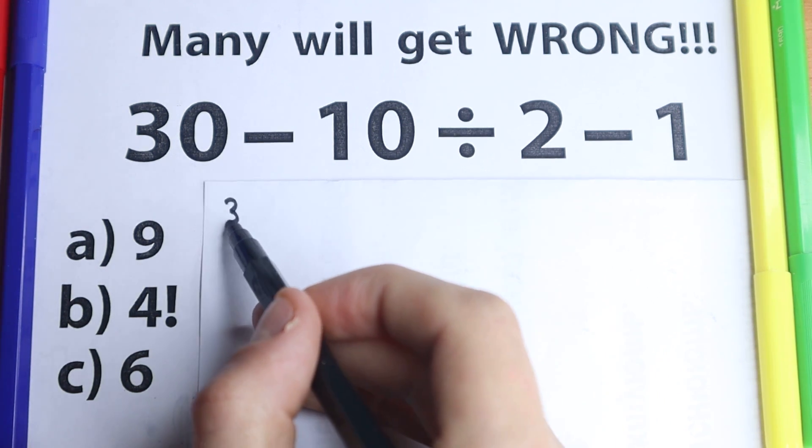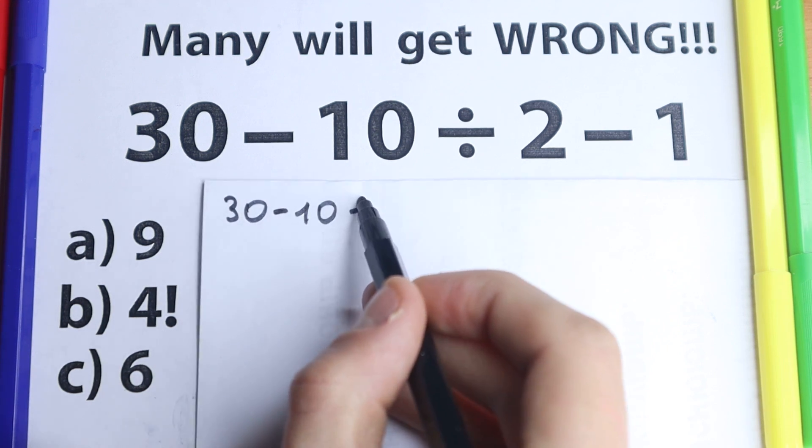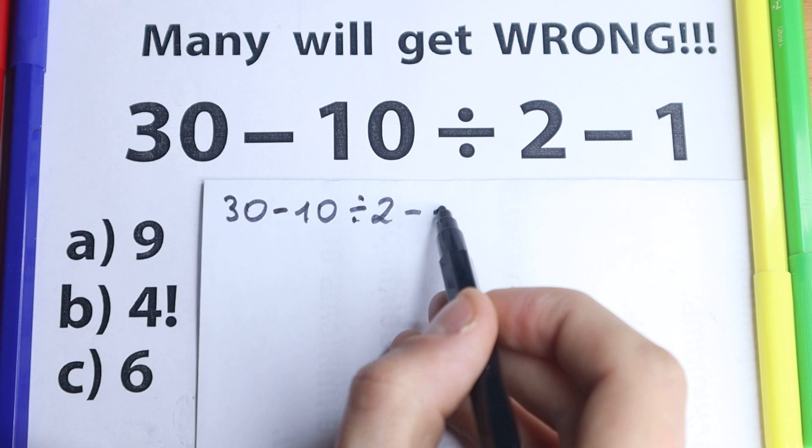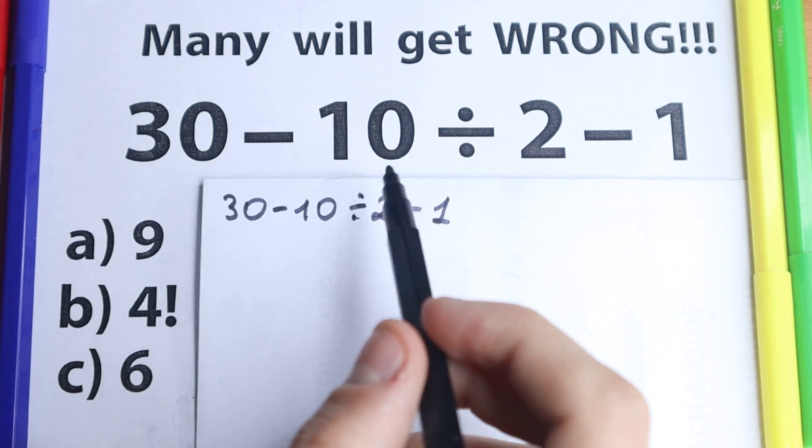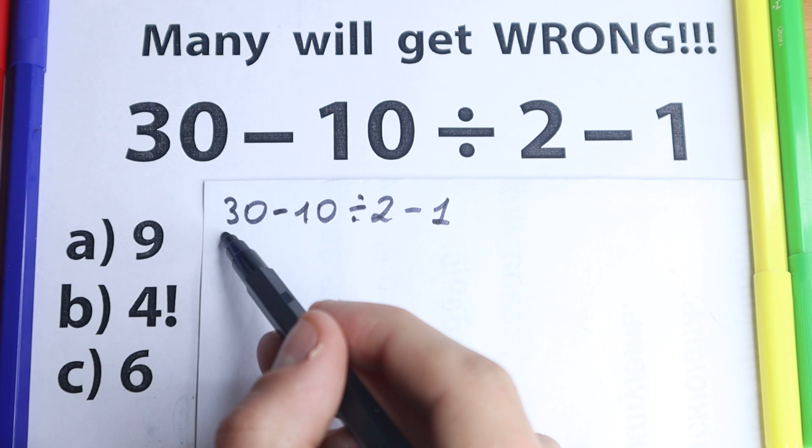I want to start with this obvious mistake right here. We have 30 minus 10 divided by 2 and minus 1. Very simple. A lot of students go from left to right, they don't know about order of operations. They say okay, 30 minus 10 equals 20.